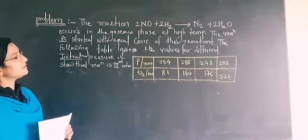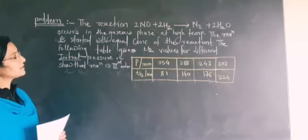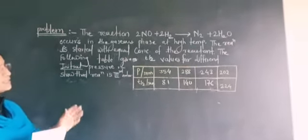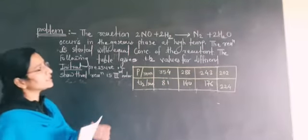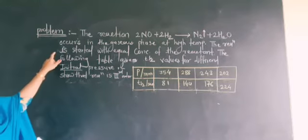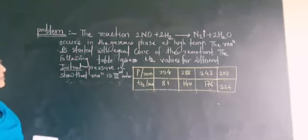The numerical is the reaction 2NO + 2H2 reacting in order to form nitrogen gas and water molecules. This reaction occurs in the gas phase at high temperature.